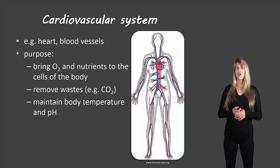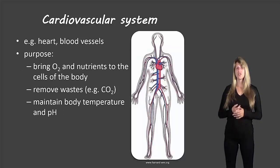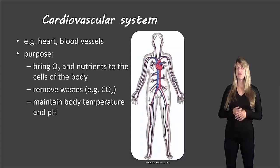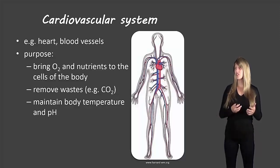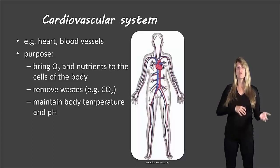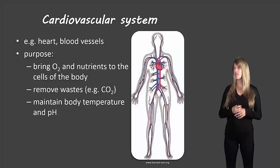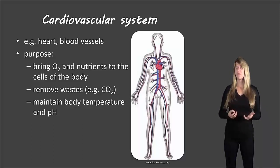We'll start with the cardiovascular system. Sometimes this is referred to as the circulatory system, but the more technical and accurate term is the cardiovascular system. Examples of organs include the heart and blood vessels. Its purpose is to bring oxygen and nutrients to the cells of the body, to remove waste like carbon dioxide, and also to maintain body temperature and pH.